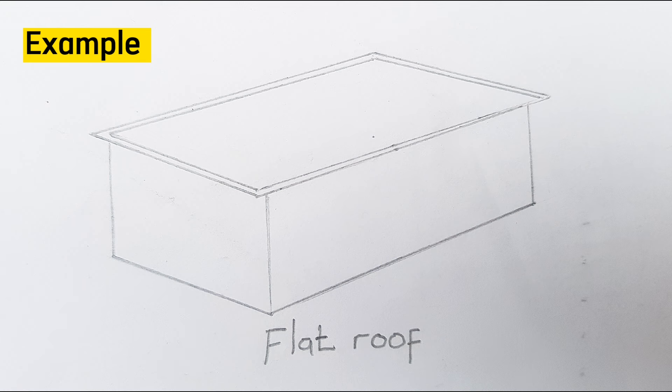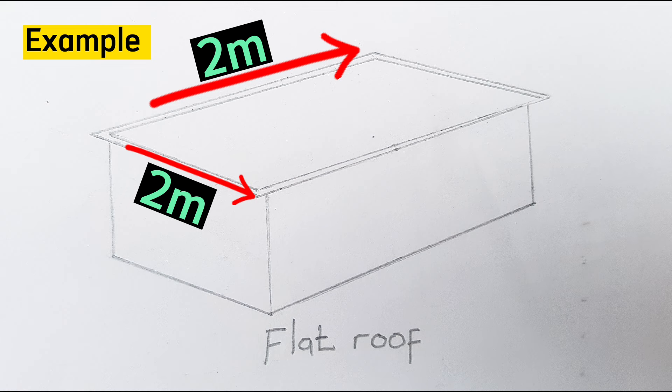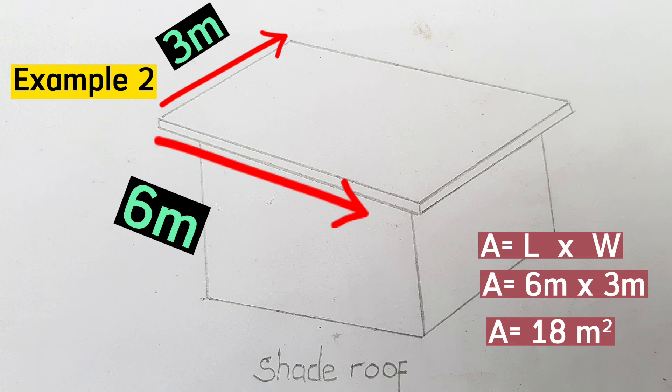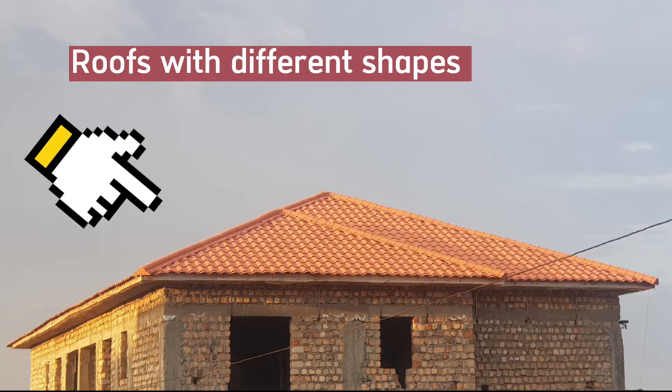For example, this is a flat roof of two meters on all sides. Getting its area: side multiplied by side — that is 2 meters multiplied by 2 meters — gives us 4 square meters. A shed roof of 6 meters along the length and 3 meters along the width gives an area of length multiplied by width: 6 meters × 3 meters = 18 square meters.